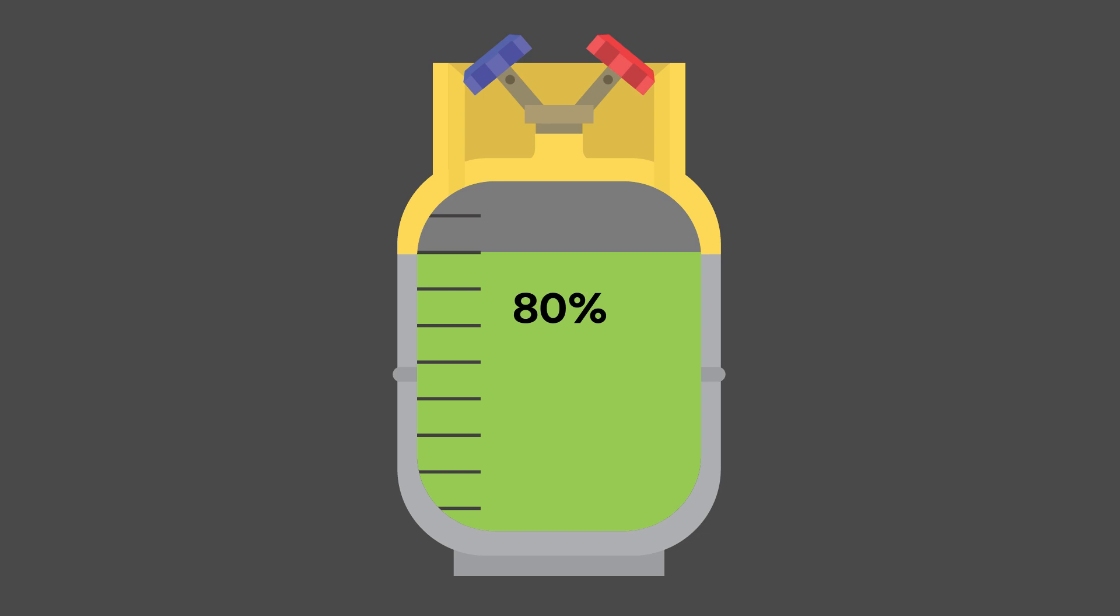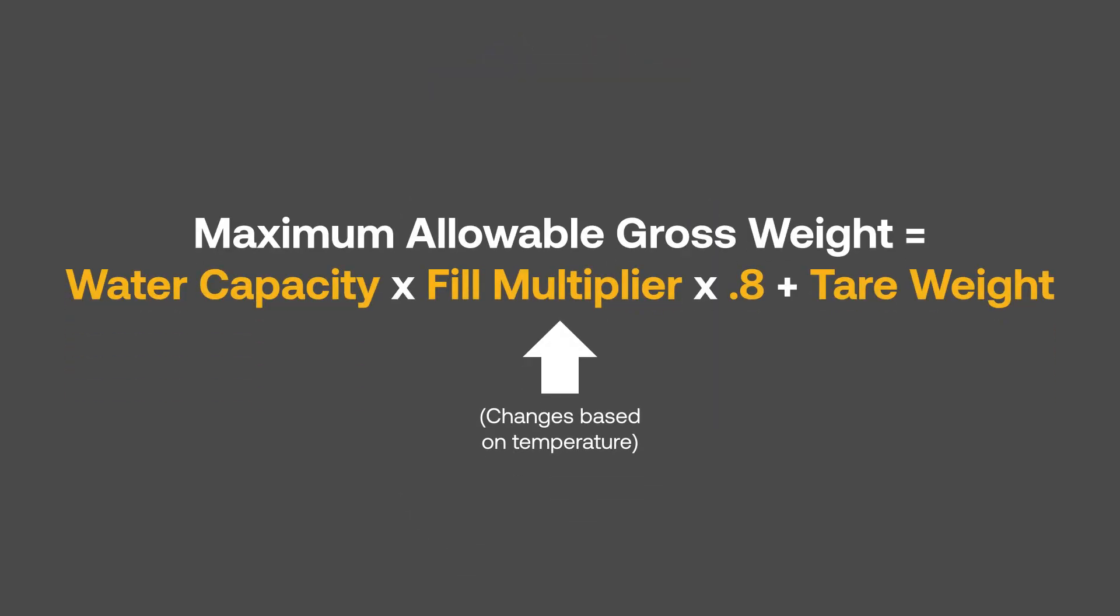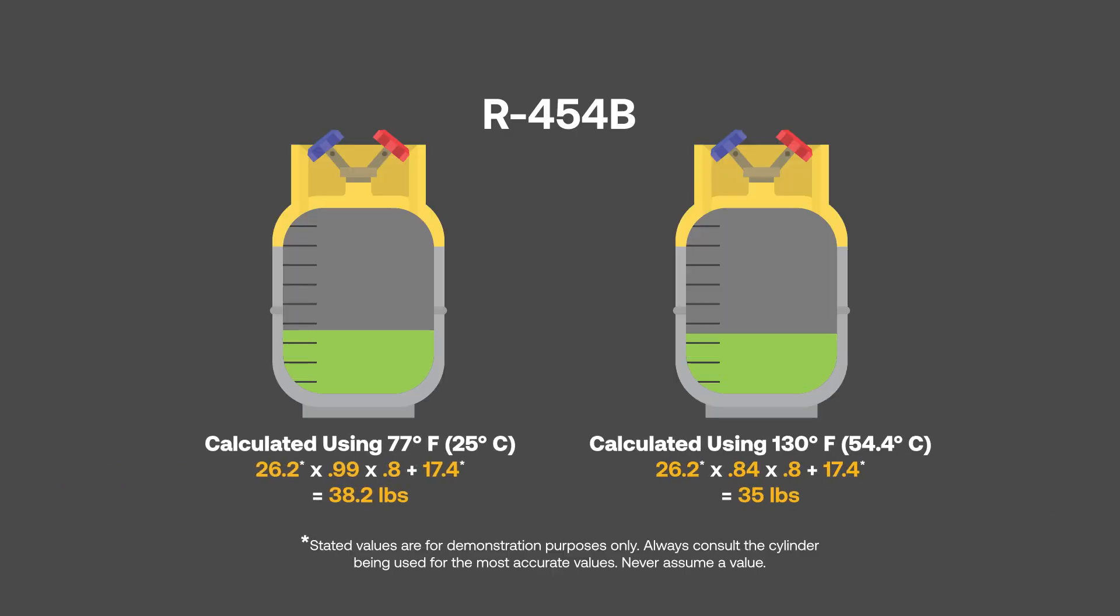In fact, the more correct way is to calculate the refrigerant weight to be added via the refrigerant's liquid density at a given temperature, typically 130 degrees Fahrenheit. For a greater margin of safety in high ambient areas, this operating temperature would be higher.